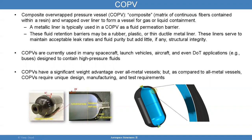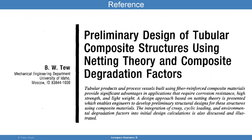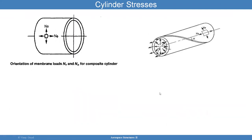It's possible that a liner will take a lot of loads and it could fail under cyclic fatigue. The idea here is to really gain an understanding of the design using simple methods. I'm going to use a paper written by BW2 on preliminary design of tubular composite structures using netting theory and composite degradation factors. It's a great write-up that can be very helpful in this analysis.